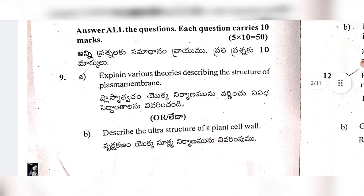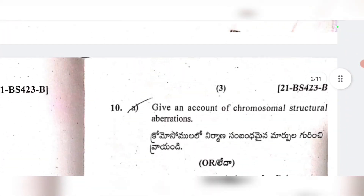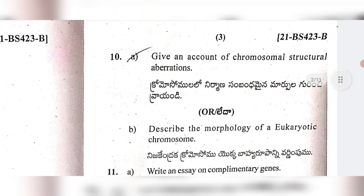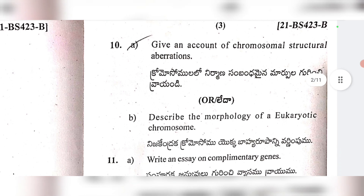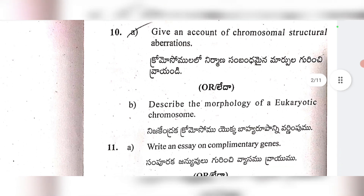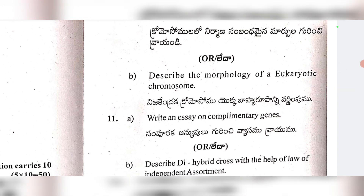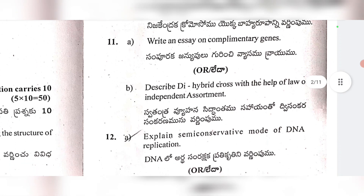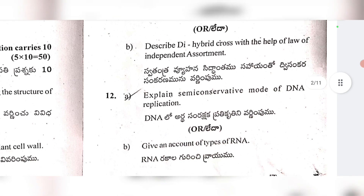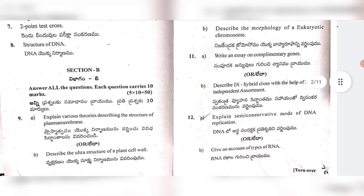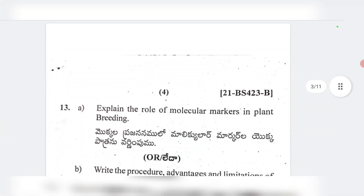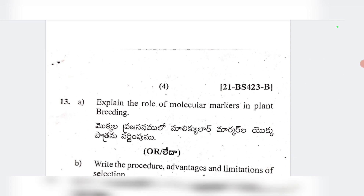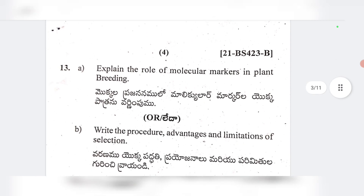10th: Describe the ultrastructure of plant cell wall. 10th: Give an account of chromosomal structural aberrations. 11th: Describe the morphology of a eukaryotic chromosome. 11th: Write an essay on complementary genes. 12th: Describe dihybrid cross with the help of the law of independent assortment. 12th: Explain semi-conservative mode of DNA replication. 13th: Give an account of types of RNAs. 13th: Explain the role of molecular markers in plant breeding. Write the procedure, advantages, and limitations of selection.